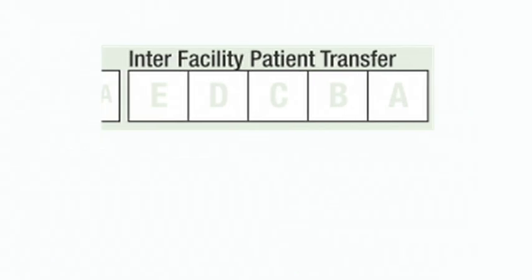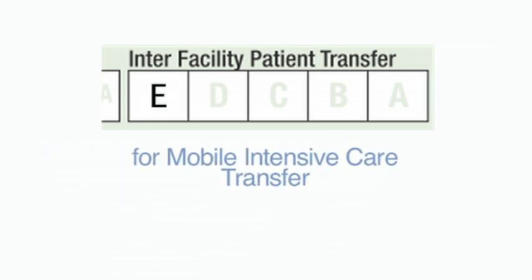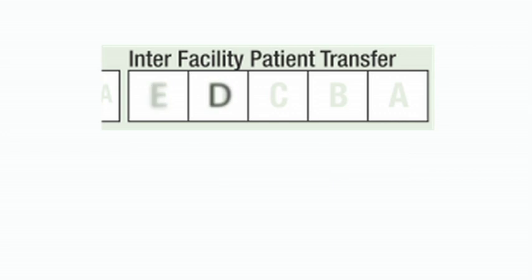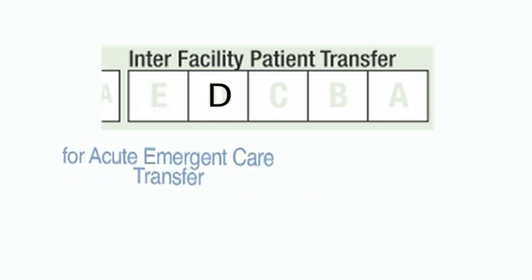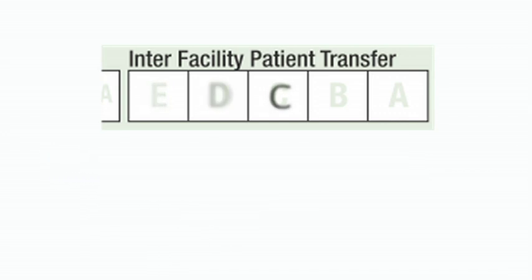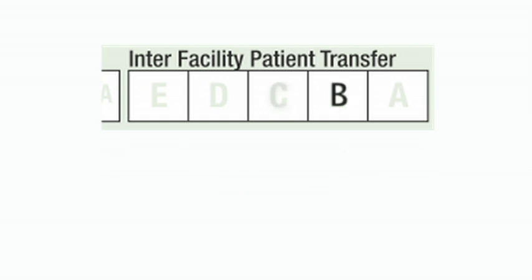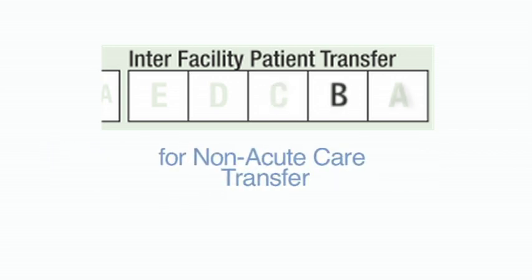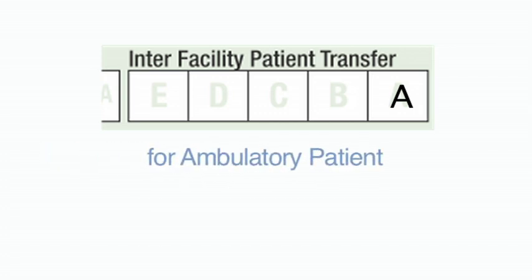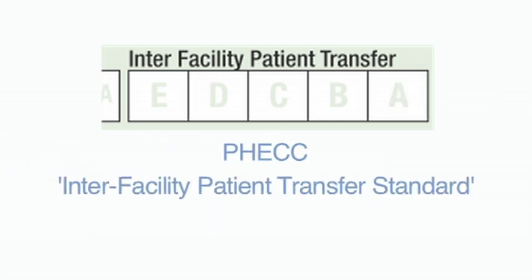Interfacility patient transfer. The interfacility patient transfer information will be entered as follows: E for mobile intensive care transfer, D for acute emergent care transfer, C for non-acute emergent care transfer, B for non-acute care transfer, and A for ambulatory patient. This is in line with the FEC interfacility patient transfer standard. Tick box as appropriate.